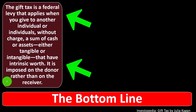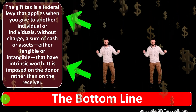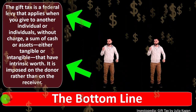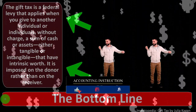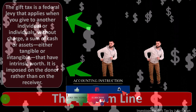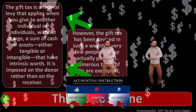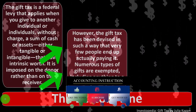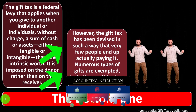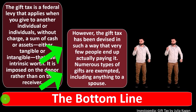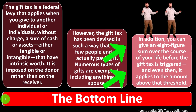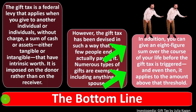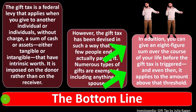If grandma had instead sent $30,000 directly to the granddaughter who then paid the school, that would be a reportable but not taxable gift of $15,000 ($30,000 minus the $15,000 annual exclusion), reducing her $11.7 million lifetime exclusion by $15,000. The bottom line: the gift tax is a federal levy applying when you give cash or assets of intrinsic worth without charge. It is imposed on the donor, not the receiver, and very few people actually end up paying it given the generous exemptions available.